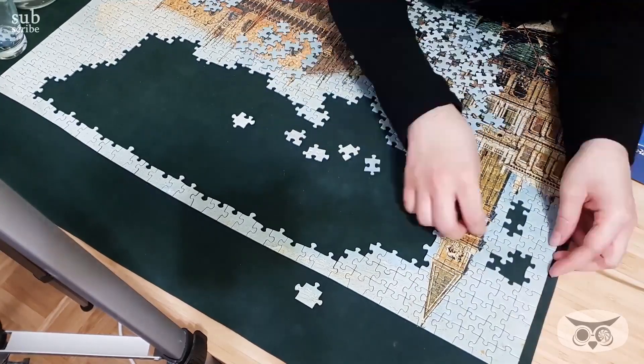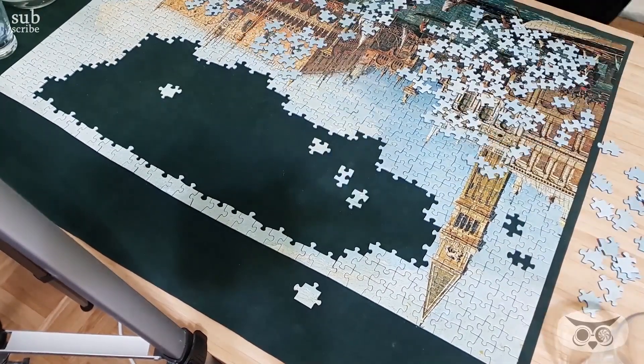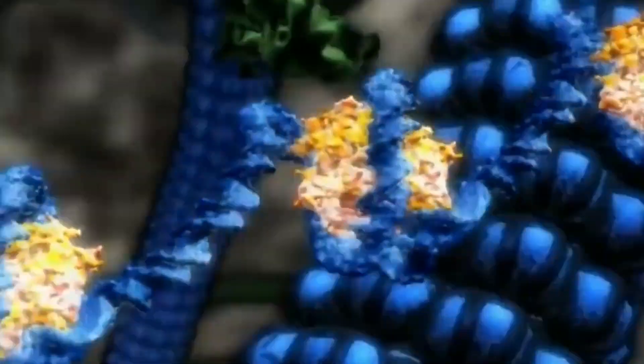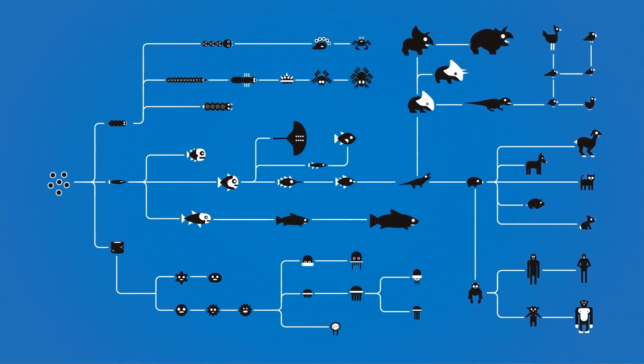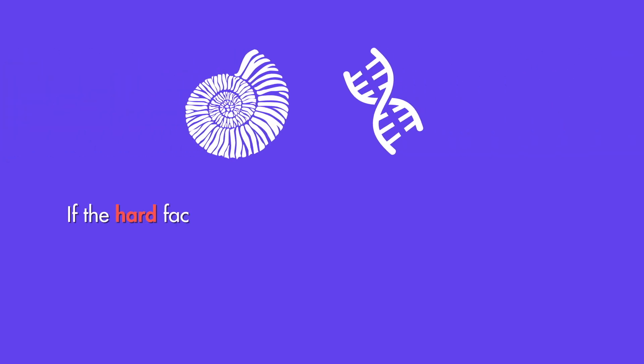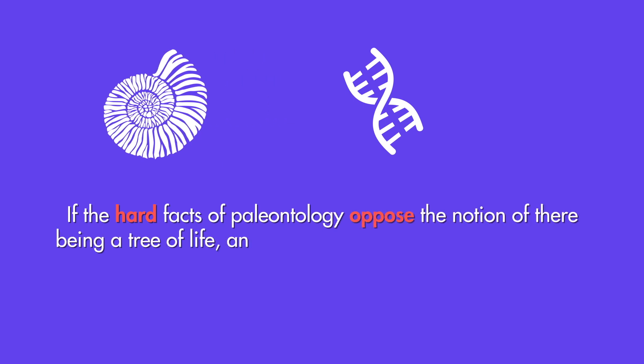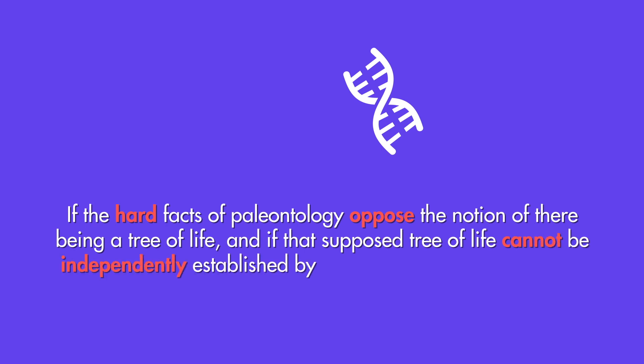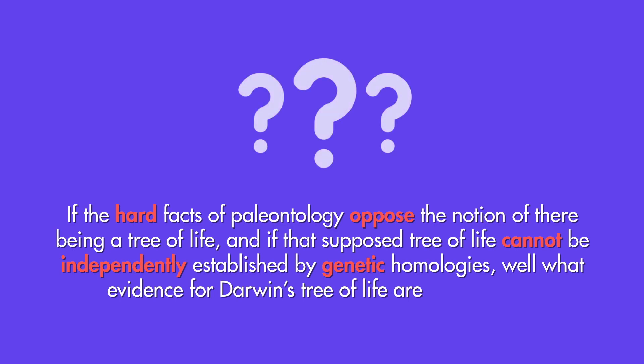Instead of homology and phylogenetic studies yielding one coherent picture of how evolutionary relationships played out in actual history, there have emerged all sorts of mutually contradictory and exclusive scenarios — so much so that scientists speak of the annihilation of the tree of life. Given that resorting to genetic homology was supposed to make up for the fact that the fossil record challenges evolutionary theory, and given that the tree of life project failed, we're now back to face the hard facts of paleontology. If the hard facts of paleontology oppose the notion of a tree of life, and if that tree of life cannot be independently established by genetic homologies, what evidence for Darwin's tree of life are we left with? Dawkins' claim that there is after all one true tree of life simply isn't supported by the evidence.